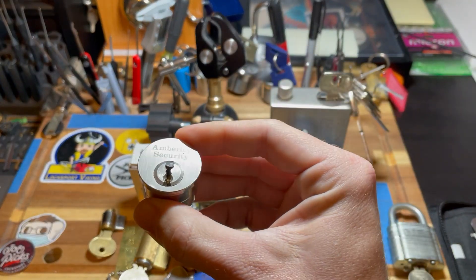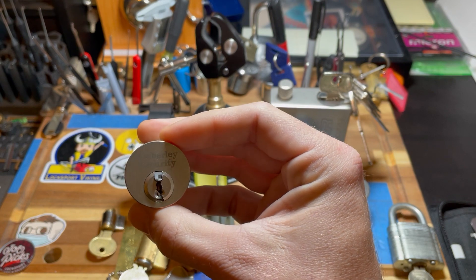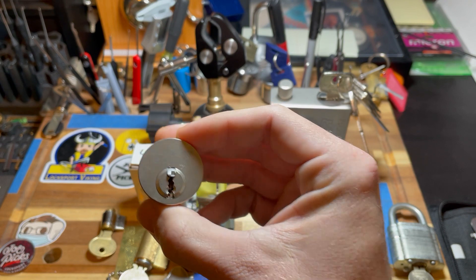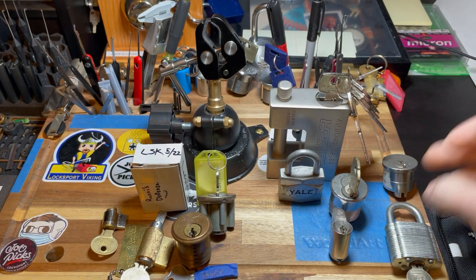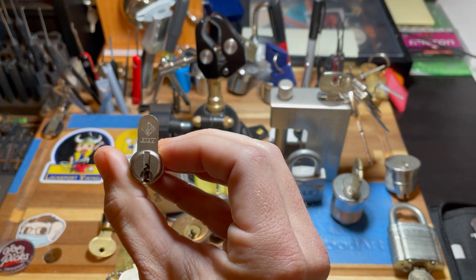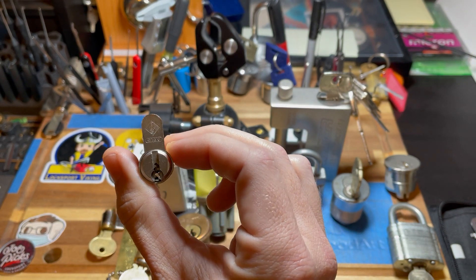Then we've got an Amberley Security. It looks pretty restricted. It looks like a restricted keyway of some kind. We've got a mortise cylinder. We've got a nice Avis right here. Look at that nasty keyway. Oh, jeez.